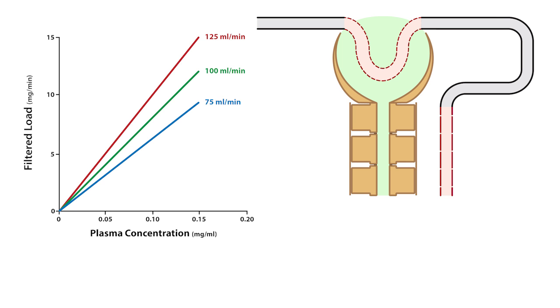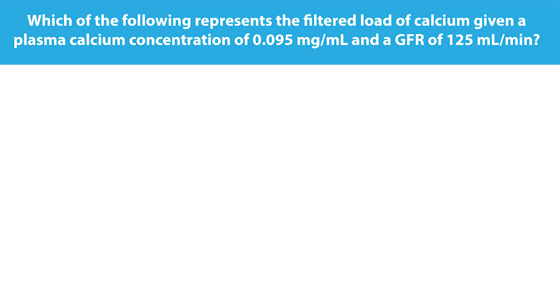So, with this in mind, let's answer the following question. Which of the following represents the filtered load of calcium given a plasma calcium concentration of 0.095 milligrams per milliliter and a GFR of 125 milliliters per minute?